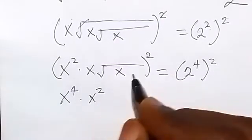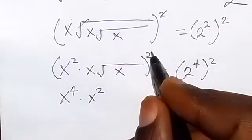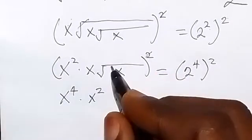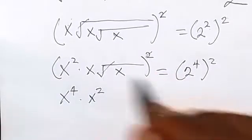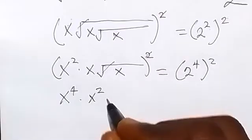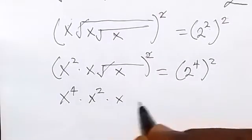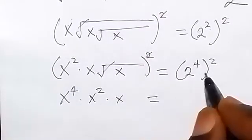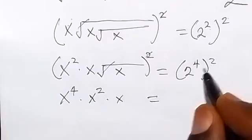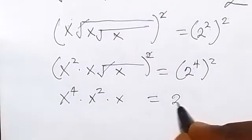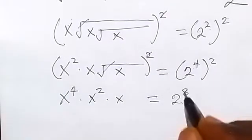This x raised to the power 2, when squared, cancels the square root, and that will remain times x. When we simplify, 2 times 4 gives us 2 raised to the power 8.